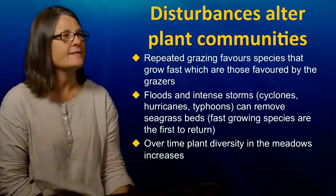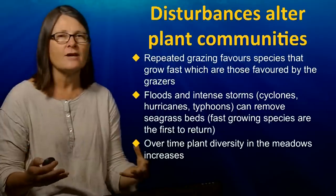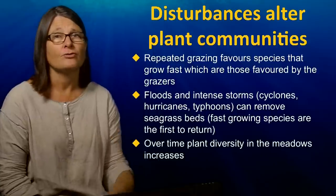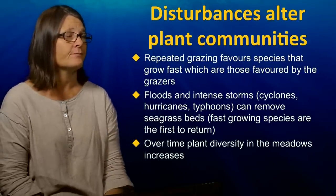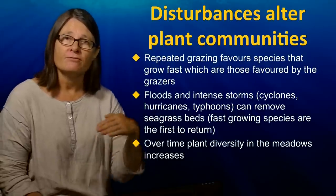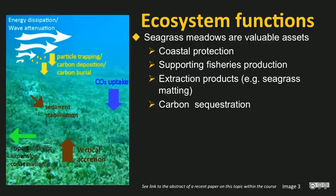In addition to grazing, floods and intense storms can also remove seagrass beds, and they likewise favour the regrowth of small, fast-growing species. Over time, the diversity of the meadows usually increases. So having considered how seagrasses respond to disturbance, we now want to talk about the ecosystem functions that seagrasses perform, making them valuable assets to communities that have seagrasses in their coastal zone.